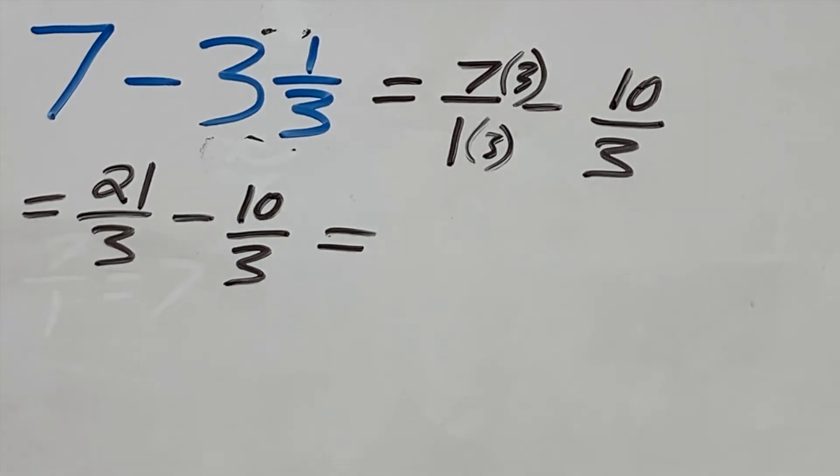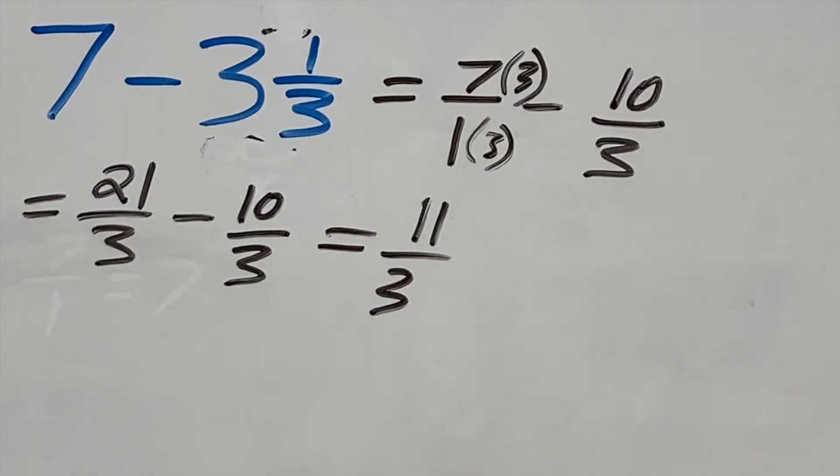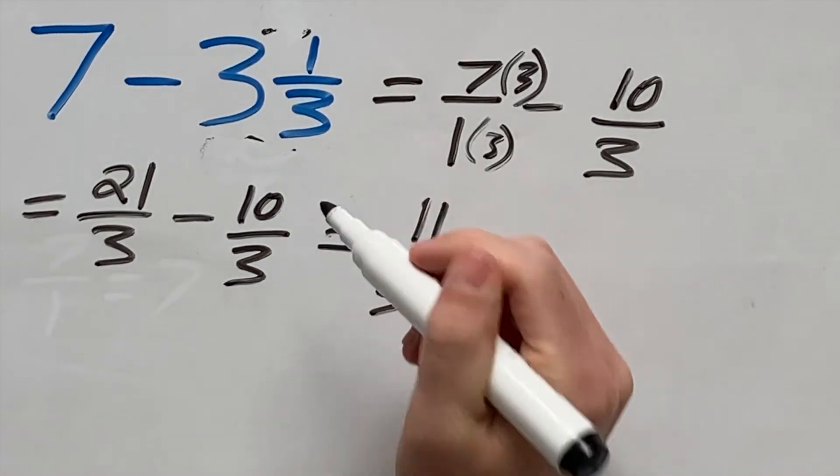21 minus 10 is just 11, and the denominator will stay the same at 3. And that is our answer.